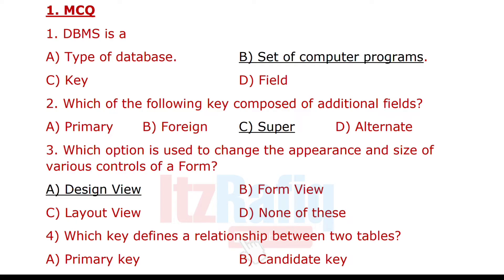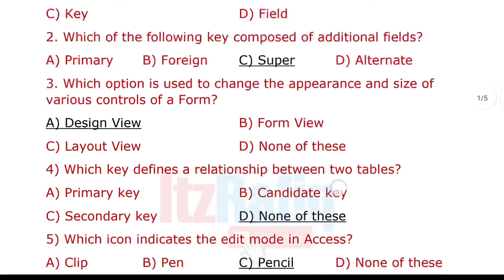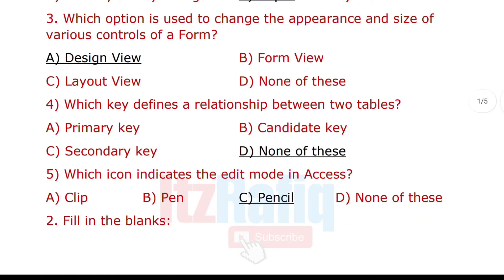Super key — super key is formed by combining a basic field with additional unique fields so you can uniquely identify a core record. Number three: which option is used to change the appearance and size of various controls of a form? This is design view.